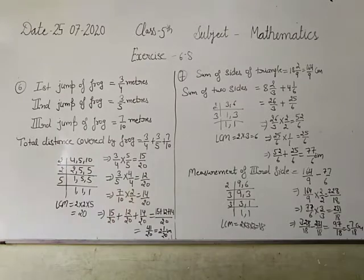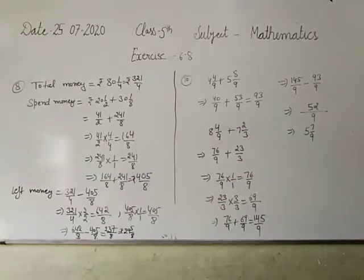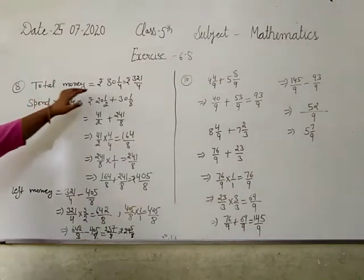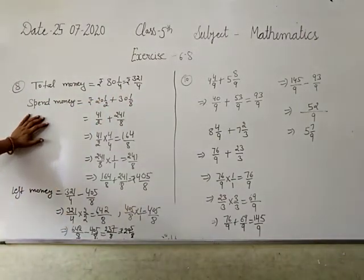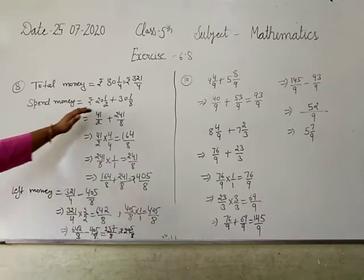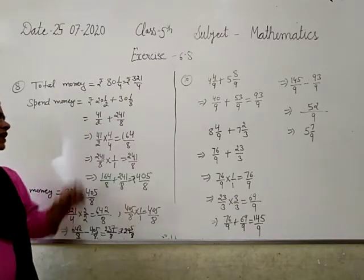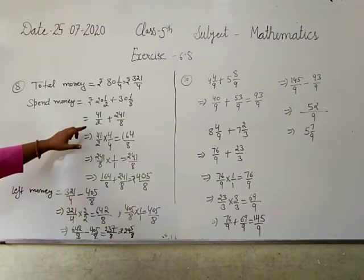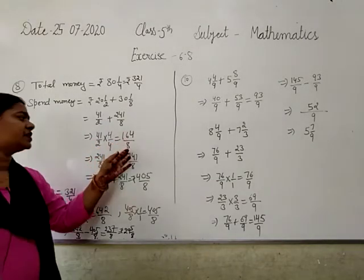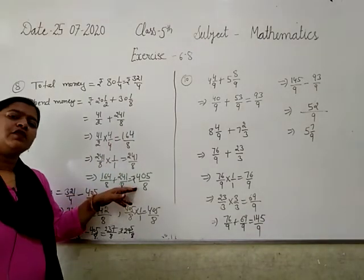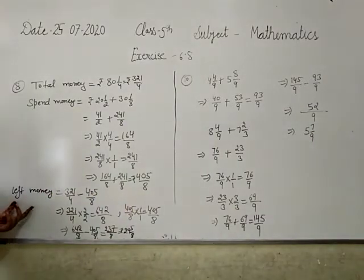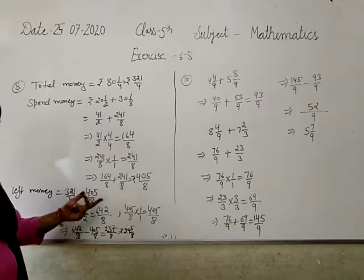Next is 8th question. John got rupees 81 by 4 from his father. She bought a book for 21 by 2 and some copies for 31 by 8 rupees. Need to find how much money is left. First calculate spent money - total spent money.